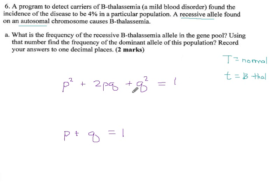They say that 4% of people have this condition, which means they are double recessive. If you are big T big T, you are completely fine. Big T little t means you're a carrier, but you're still fine. Little t little t is the only case where you have thalassemia, and they tell us that happens 4% or 0.04 of the time.